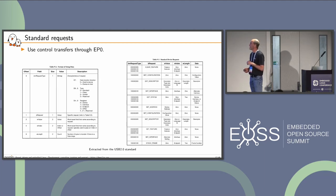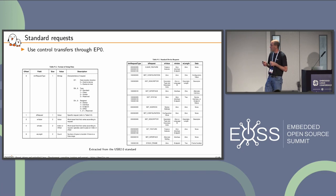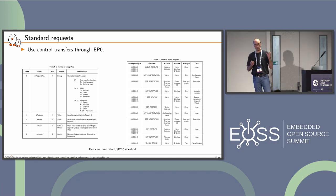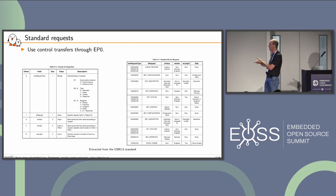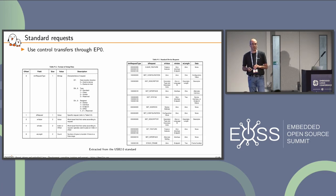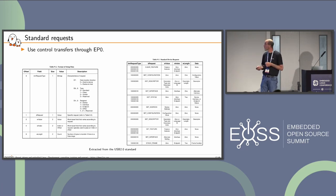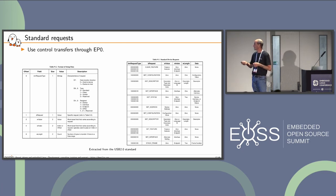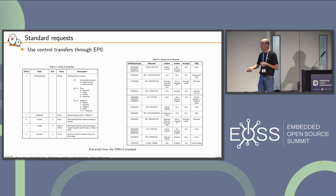Control transfers through endpoint zero follow a defined setup structure. The setup token data maps exactly to the setup definition: request type, request, value, index, and length of the data stage. If length is zero, there is no data stage. Standard requests include: clear feature, get configuration, get descriptor, get status, set address, set configuration, and others.